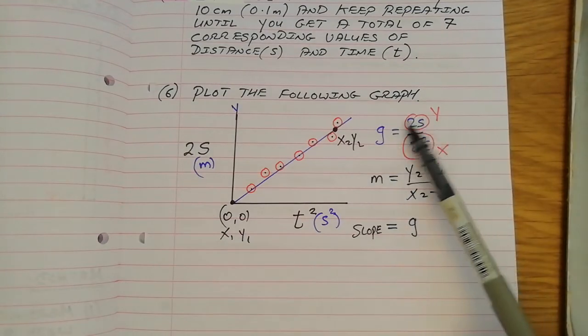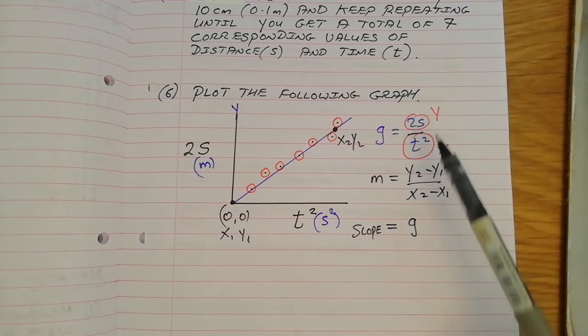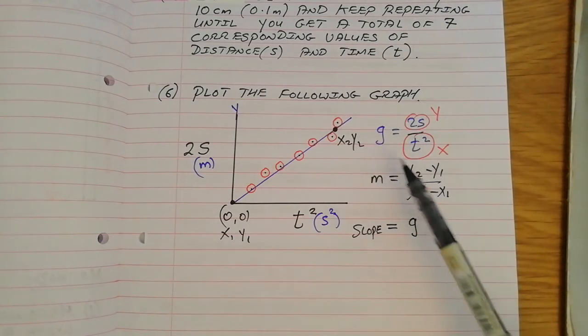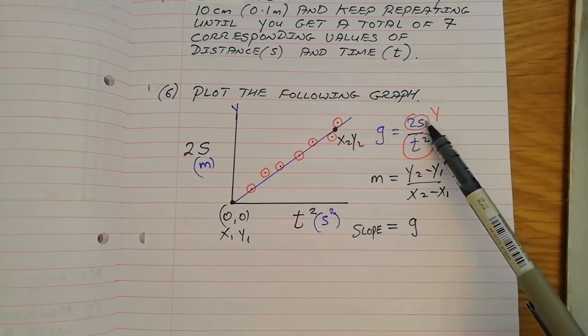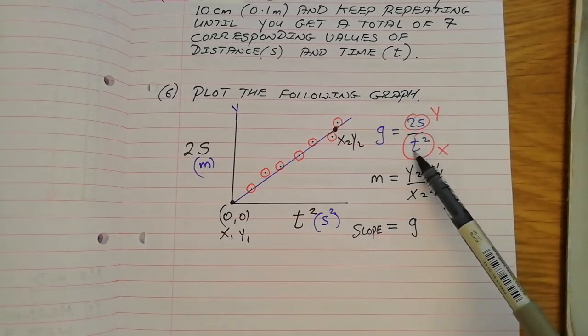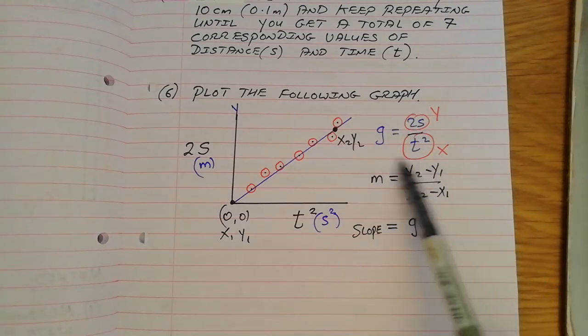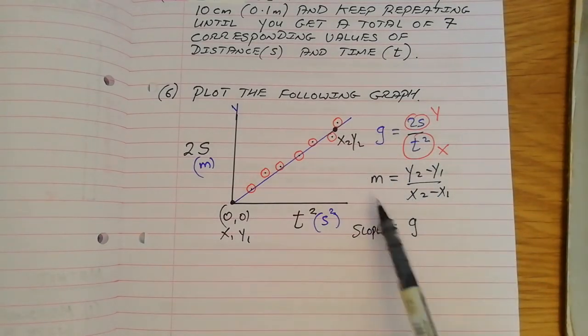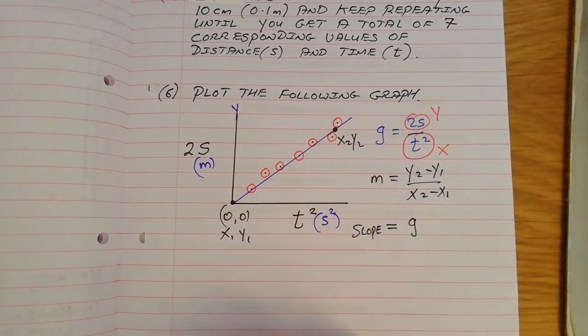then automatically, if you plot that graph and get its slope with the traditional slope formula, the slope will be g. If any time you have an expression or formula and you plot what's on the top on the y-axis and what's on the bottom on the x-axis, automatically, the slope of the graph will be whatever that is, which in this case is g the acceleration due to gravity. And it's this we're going to be looking at today.